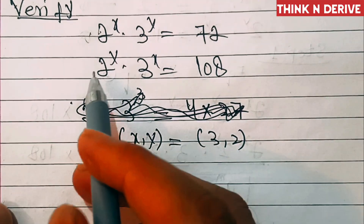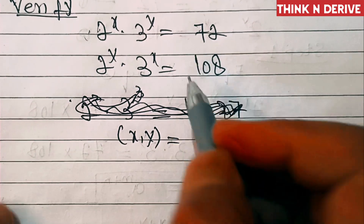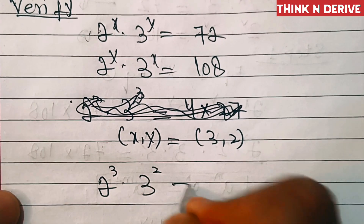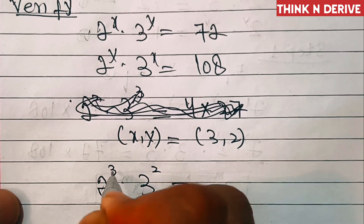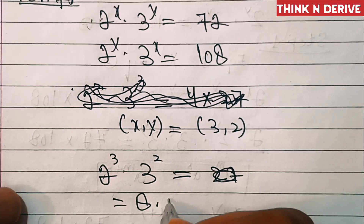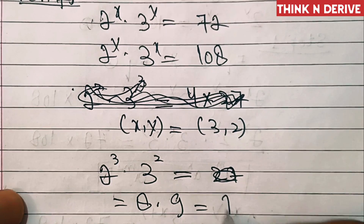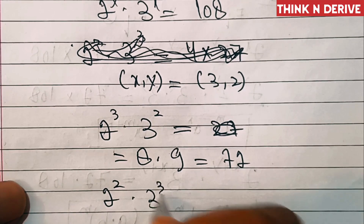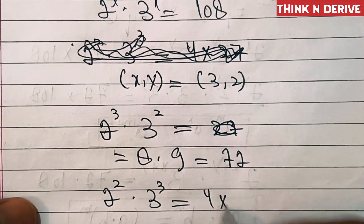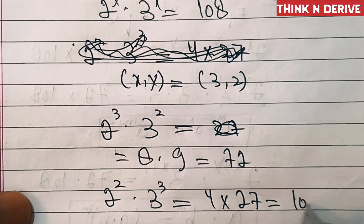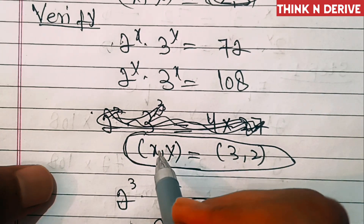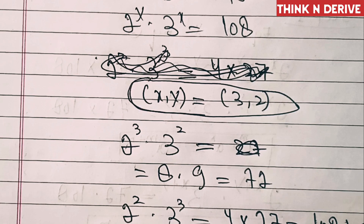Let's verify: substituting into equation one, 2 power 3 into 3 squared equals 8 into 9 equals 72, which is correct. And 2 squared into 3 cubed equals 4 into 27 equals 108, which is also correct. So x equals 3, y equals 2 is the required solution. Thanks for watching, don't forget to subscribe, and we'll see you in the next video.